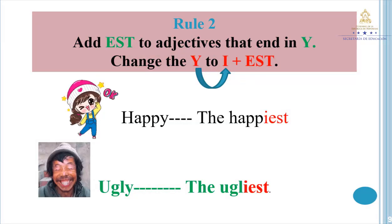Two-syllable adjectives — Rule number two: Add -est to adjectives that end in -y, and change the -y to -iest. Le vamos a agregar la terminación -est a los adjetivos que terminen con -y. Cambia la -y por -iest. Example: happy — the happiest; ugly — the ugliest.